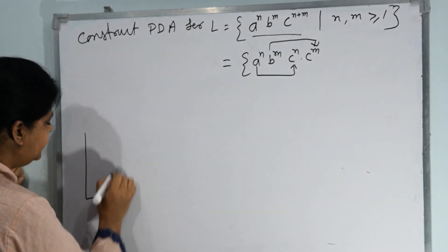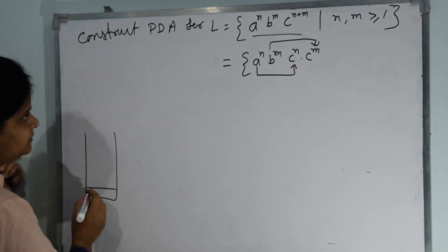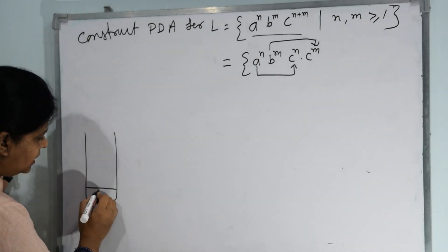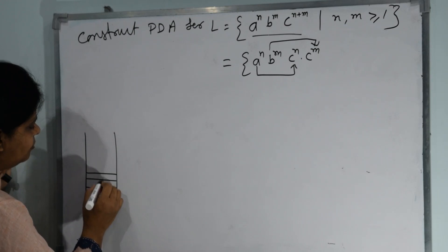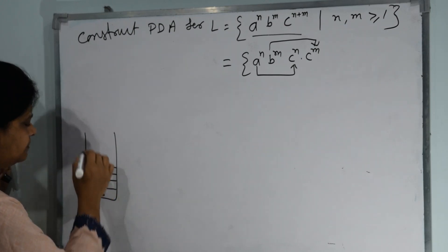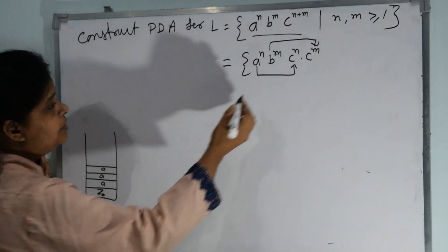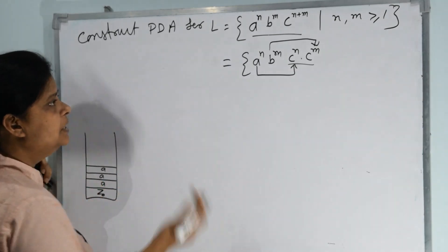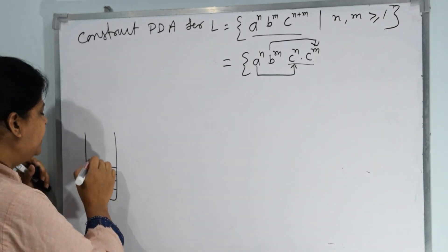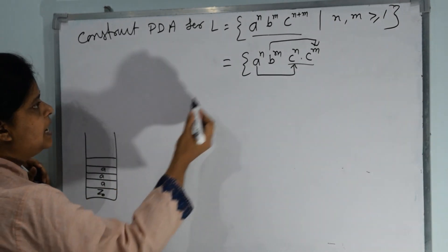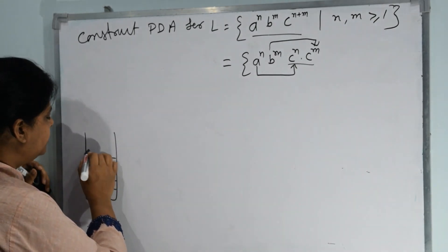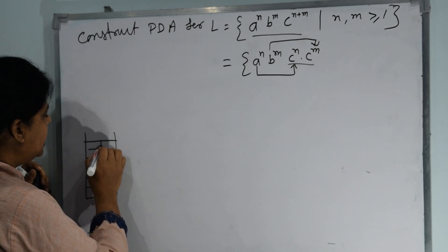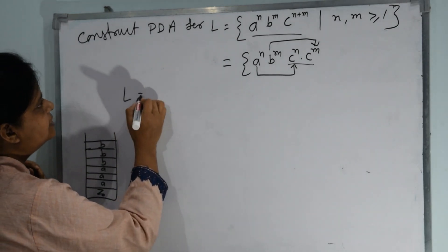First, we take a container. In the container, we have z0. Whatever A's we get, we push all of them. We push all of them. Now, because C here is equivalent to the combination of both, now B, since B comes after A (A followed by B, B followed by C), whatever B's we get, we add them here. I don't know how many will come, this language contains what here.